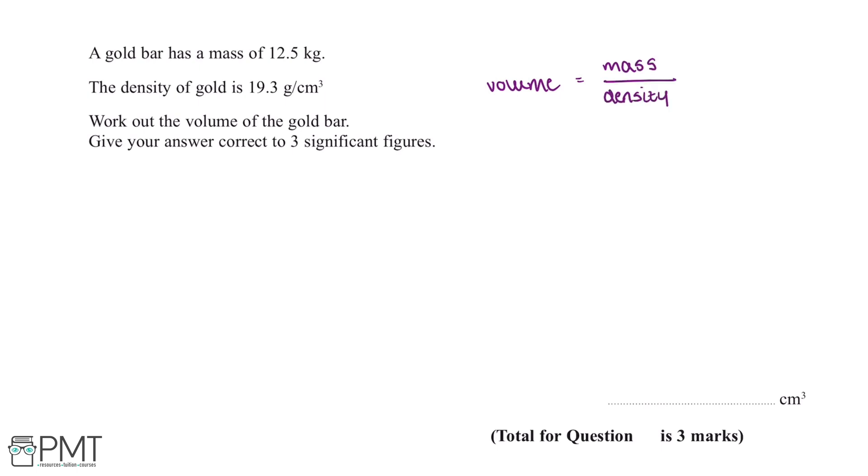The next thing we'll need to do is convert the mass of the gold bar into grams because our density has been given in grams per cm³. One kilogram equals 1,000 grams. To get from 1 kilogram to 12.5 kilograms we multiply by 12.5, so we do the same to the right hand side. 1,000 times 12.5 gives us 12,500 grams.